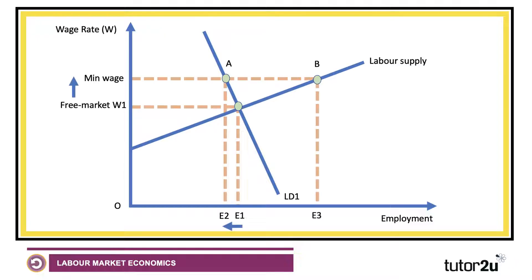That has two effects. It causes an expansion of labour supply to E3 and a contraction of labour demand to E2. This is the standard diagram which many students would draw for a minimum wage intervention, where the minimum wage can lead to an excess supply of labour.